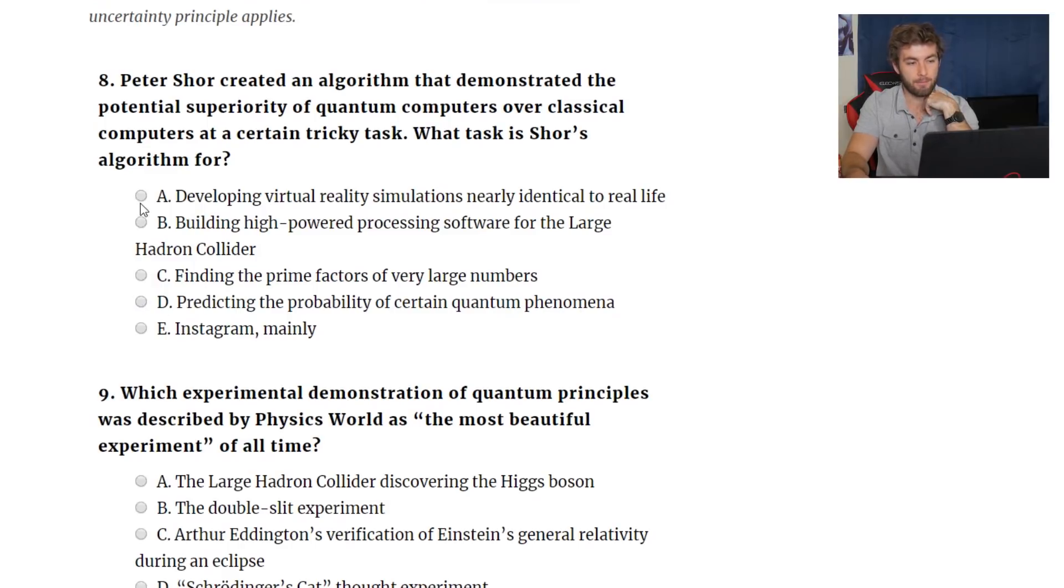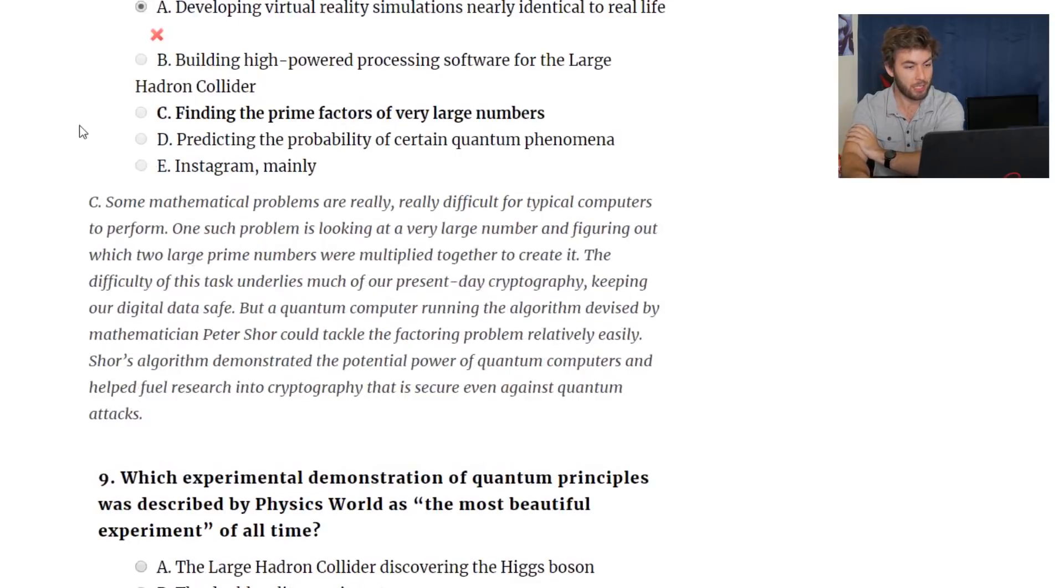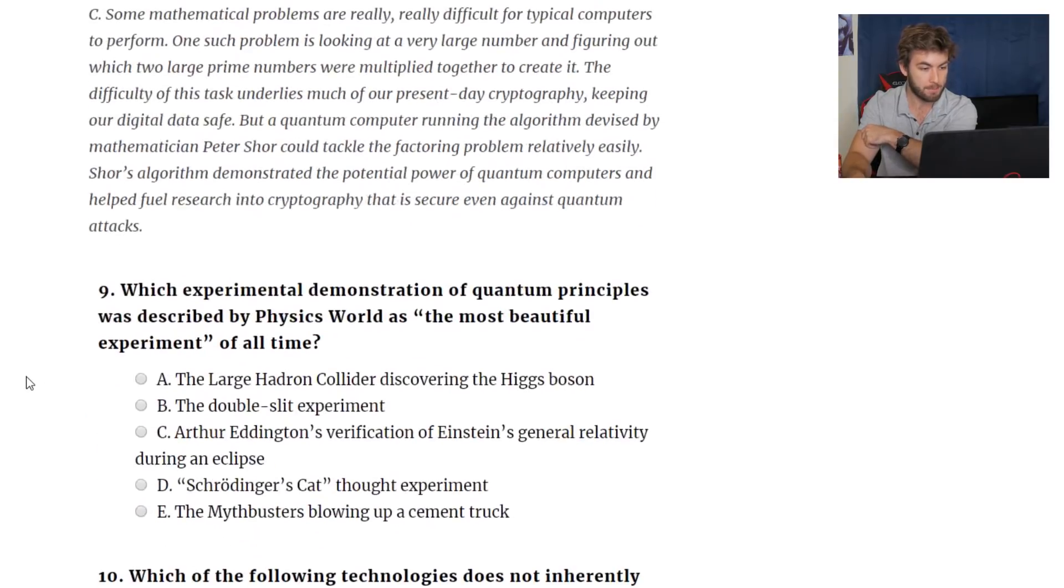I'm going to go with A, developing nearly identical to real life. Because my thought process for that is, if it's virtual reality that lets you choose your own path, then it might have to calculate all of the other paths. So, and I was wrong. Go figure. Some problems are really, really difficult. One such problem is looking at very large numbers and figuring out which two large, oh it was the prime number one. I wouldn't have thought that one. But a quantum computer running the algorithm devised by a mathematician could tackle the factoring problem relatively easily. That's pretty interesting. I'm actually not too sure where we're at with quantum computing at the moment. I know it's still, it's not done yet, but yeah, I have to read up on that.